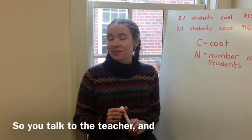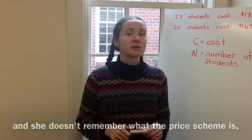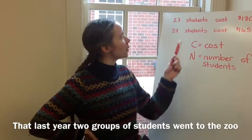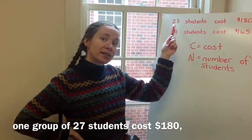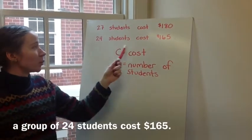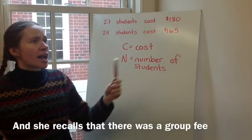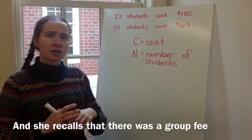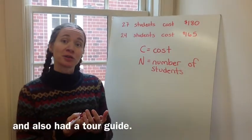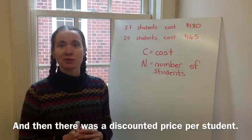So you talk to the teacher, and she doesn't remember what the price scheme is, but she has written down that last year two groups of students went to the zoo. One group of 27 students cost $180, and a group of 24 students cost $165. She recalls there was a group fee that covered the cost of admission for chaperones and a tour guide, and then there was a discounted price per student.